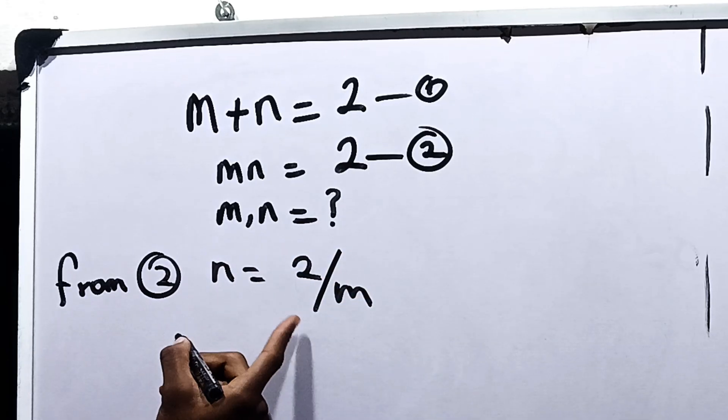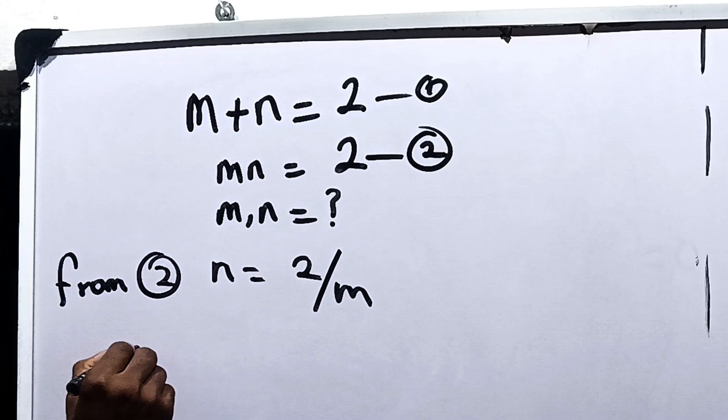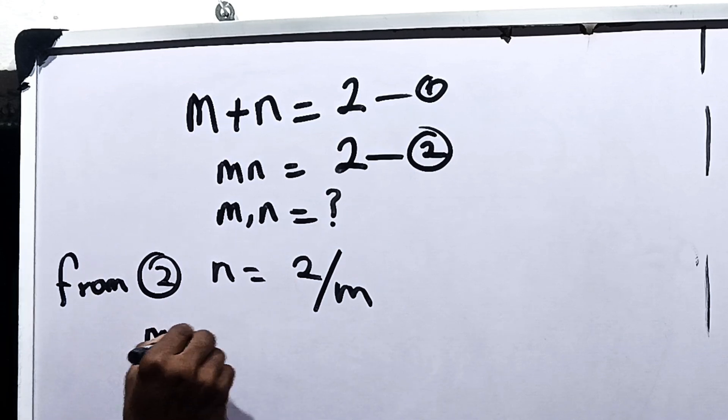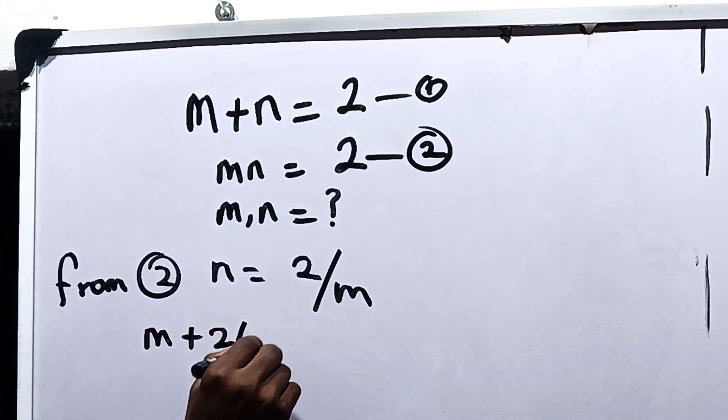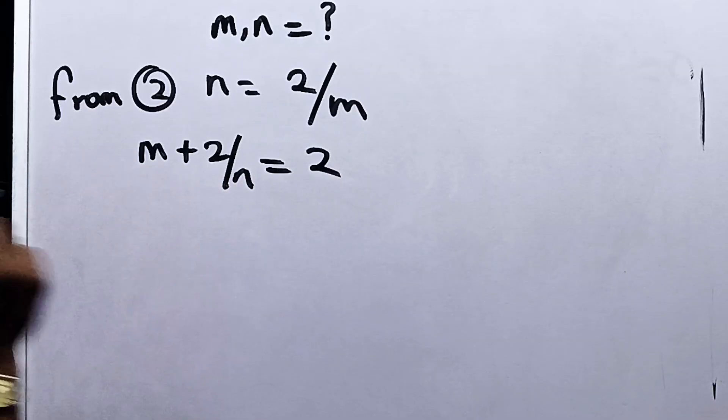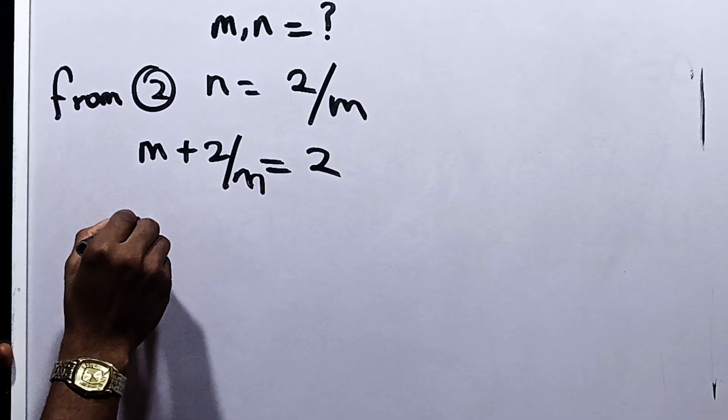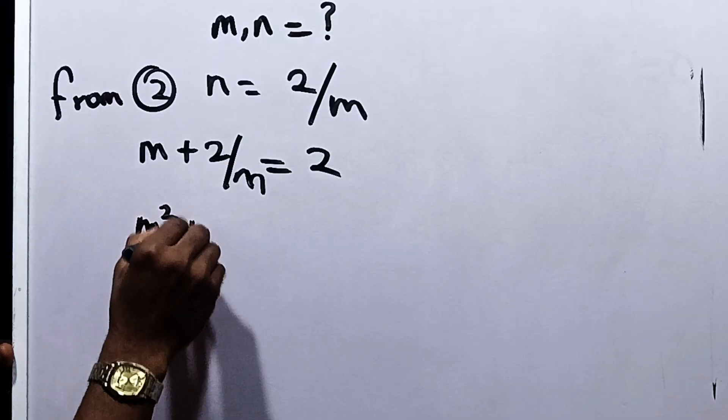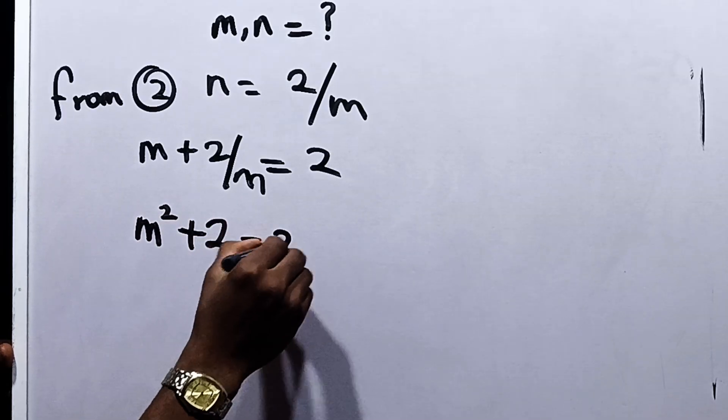Now, from here, we can substitute n as 2 over m into equation 1. So we have m plus 2 over m, which is n, is equal to 2. Multiplying each term here by m, we have m squared plus 2 is equal to 2m.